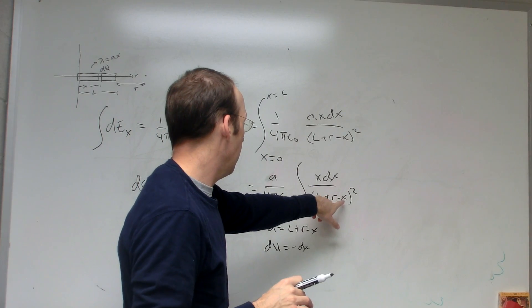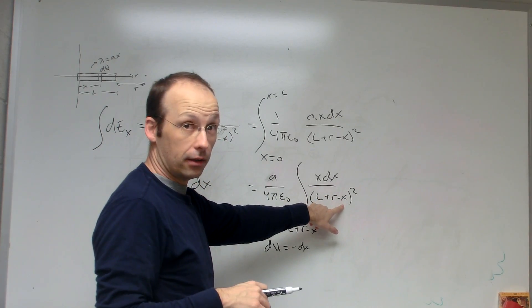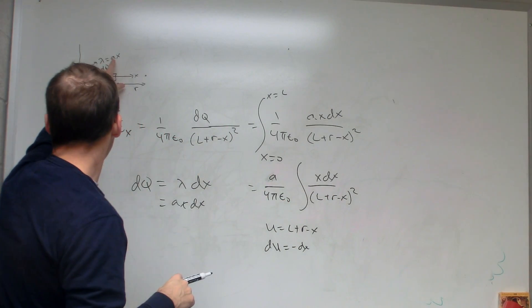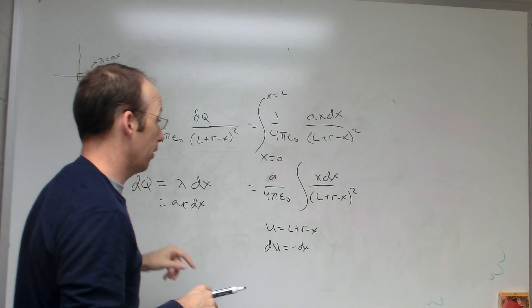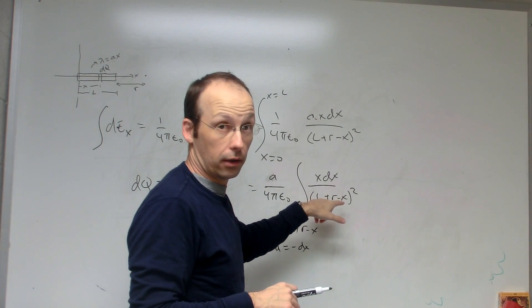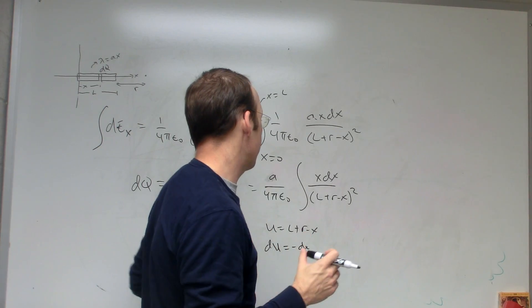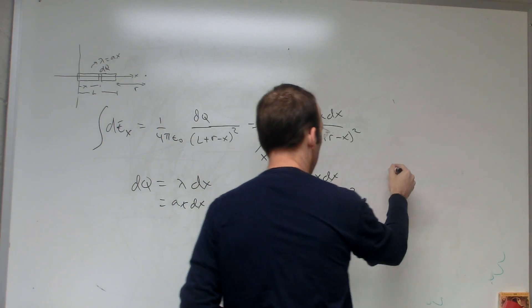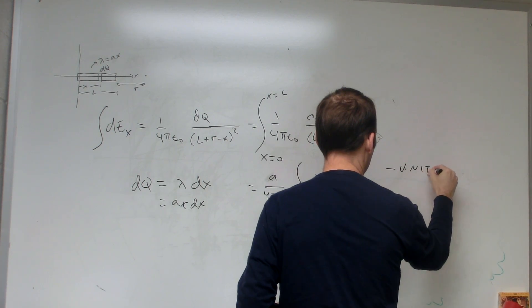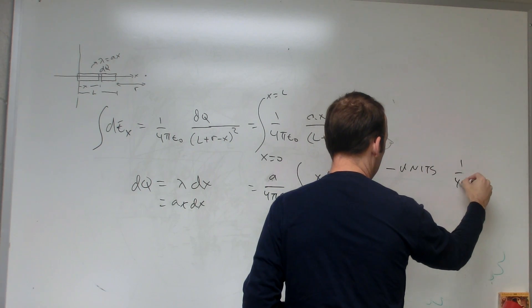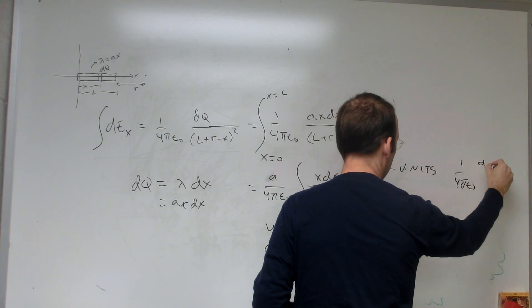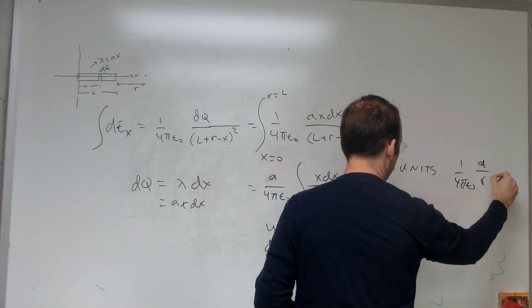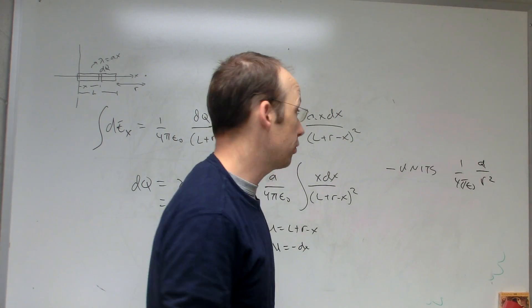But you know, once you get this integral, then you'll get something that doesn't have x in it, but it will have a and L and lambda in there and r, okay? And you can still check and see, make sure that things work. You can check the units, right? It should be the same units as this, q over r squared. Should have the same units as a point charge.